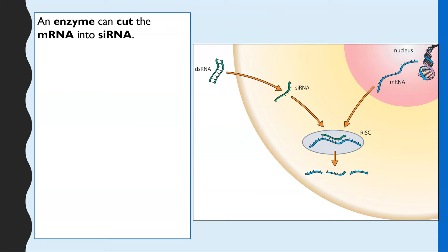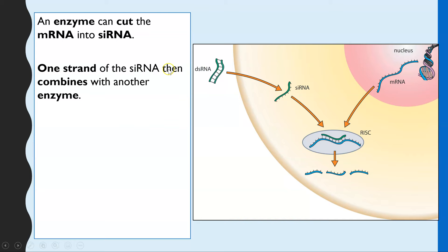Let's look at how this actually occurs. We have some double-stranded RNA which, when in the cytoplasm, can be cut into small sections and also made single-stranded. Both the cutting and the making it single-stranded are done by two different enzymes. We now have small interfering RNA — named because it is shorter, having been cut up, and it's going to interfere with other RNA.